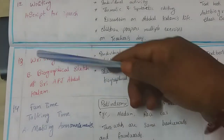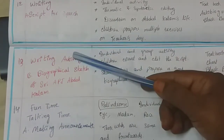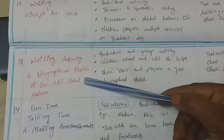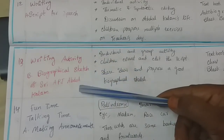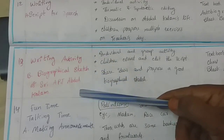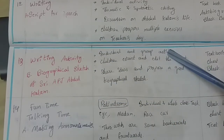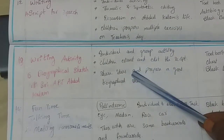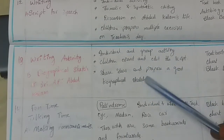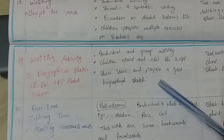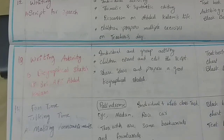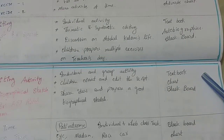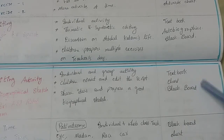In period 13, we have a writing activity: a biographical sketch of Sri A.P.J. Abdul Kalam. The method is individual and group activity. Children correct and edit the script, share ideas and prepare a good biographical sketch. TLM: textbook, chart and blackboard.